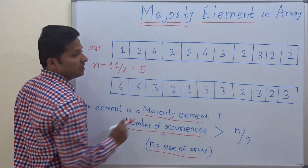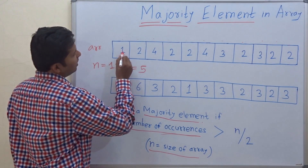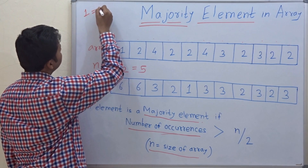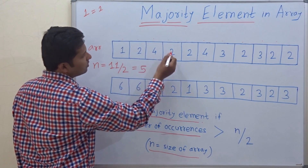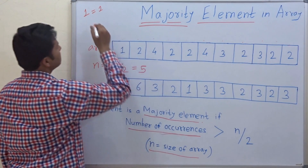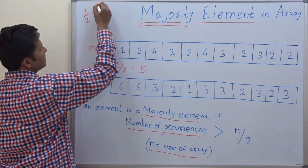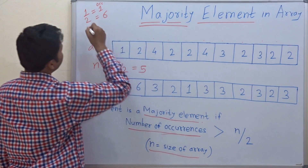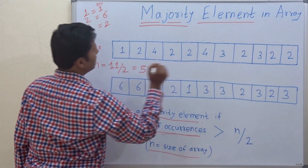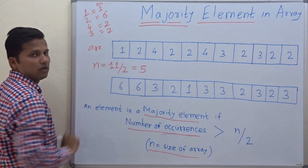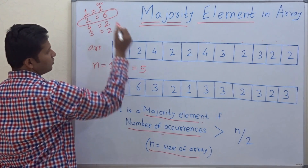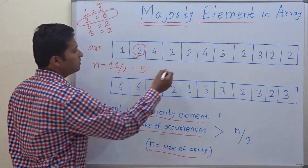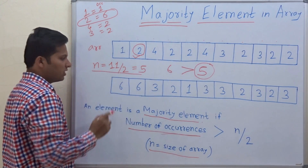Let's count the occurrences of each element. Element 1 is occurring only one time. Element 2 is occurring 6 times. Element 4 is occurring 2 times, and element 3 is occurring 2 times. So element 2 is the majority element in this array because it occurs 6 times and 6 is greater than 5.